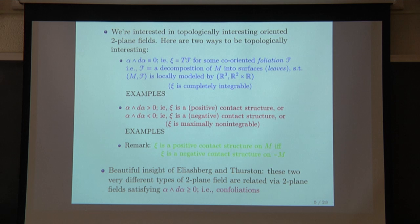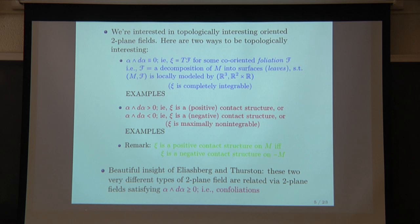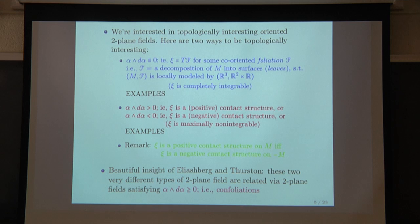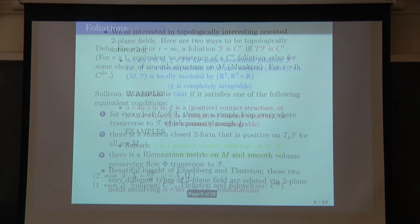It was a beautiful insight of Eliashberg and Thurston that these two very different types of two-plane field — one completely integrable, the other maximally non-integrable — are related in a really interesting way. If one satisfies α ∧ dα > 0 and the other α ∧ dα = 0, it's not such a huge leap to combine them: we're also interested in two-plane fields satisfying α ∧ dα ≥ 0, and those are called confoliations.